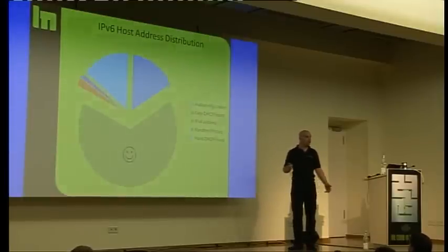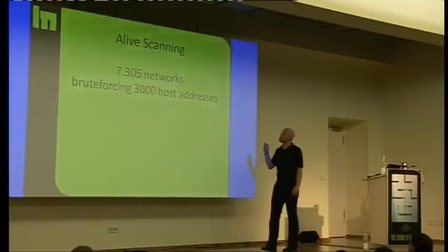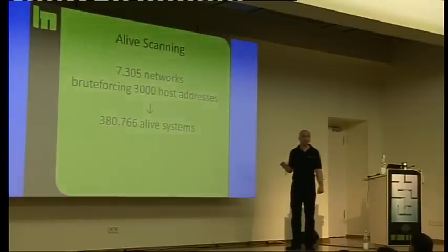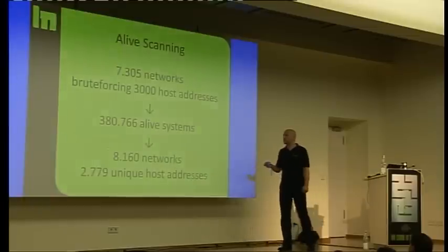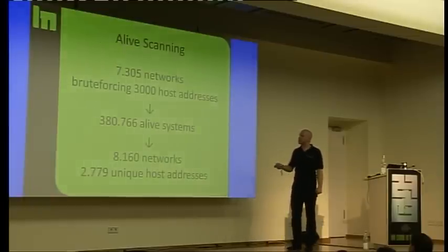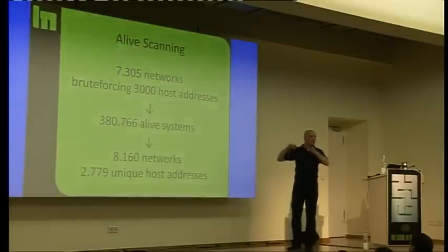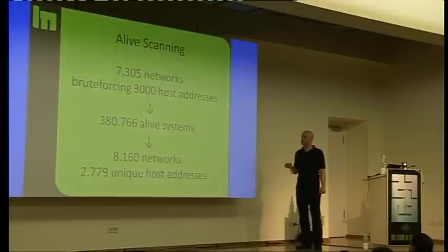I did a live scan on all the found networks, brute force 3,000 host addresses based on this address space, and I found, wow, 380,000 systems alive. That's way more. How do I find more networks? Because there are lots of variety when a router says this system is not available. Then you have some more networks identified. This is why more networks are in the output than in the input.